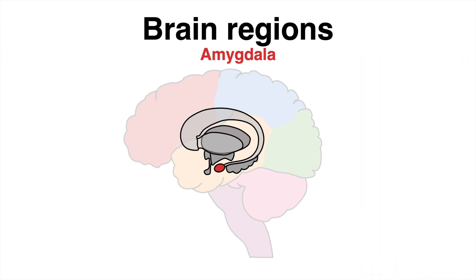The small structure here is the amygdala, which is widely famous as the fear center. Feelings such as anxiety, fear and also anger arise here. The amygdala plays a role in emotional learning and the interpretation of facial expressions.